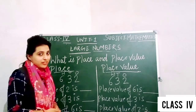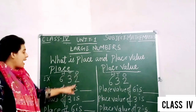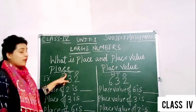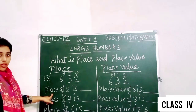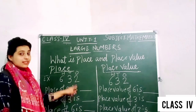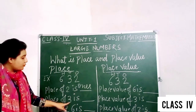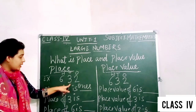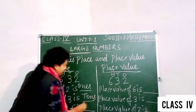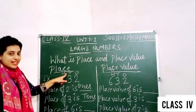Now here we have the number 632. The place of 2 in this number is ones, the place of 3 in this number is tens, and the place of 6 in this number is hundreds.